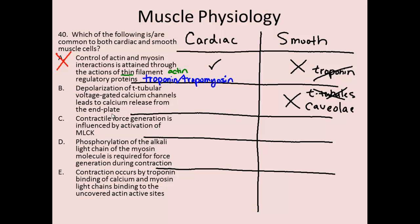Thinking about what would be true of cardiac: cardiac does have t-tubules, and within those t-tubules there are dihydropyridine receptors — voltage-gated calcium channels that allow calcium to enter the cell. Cardiac tissue does undergo calcium-induced calcium release (CICR), which is actually required for cardiac muscle to operate, so at least that part of the statement is true.